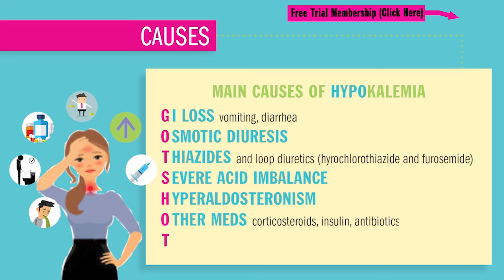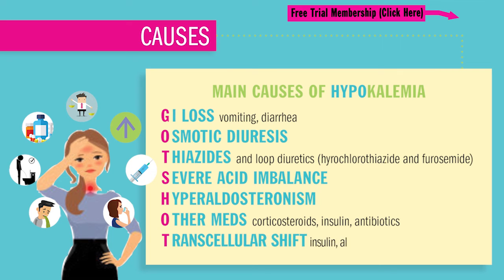O is for other medications that deplete potassium. These include corticosteroids, which promote water retention leading to hemodilution — basically dilutional hypokalemia. Insulin opens up the cells and potassium sneaks inside, causing low bloodstream potassium. Antibiotics like penicillins and aminoglycosides can induce renal potassium excretion. Transcellular fluid shifts, as mentioned before using insulin, but also with albuterol, push potassium into the cell causing low bloodstream potassium.